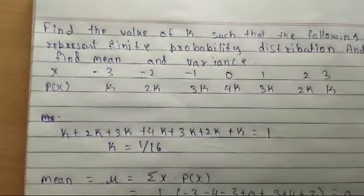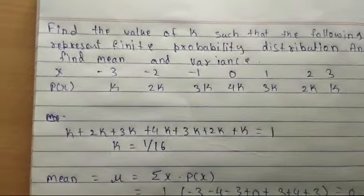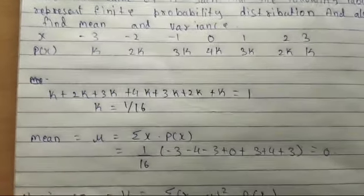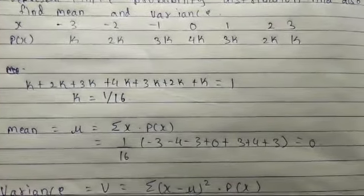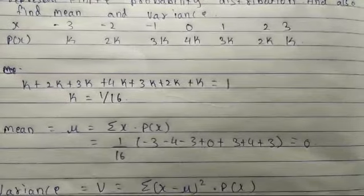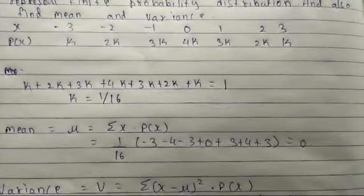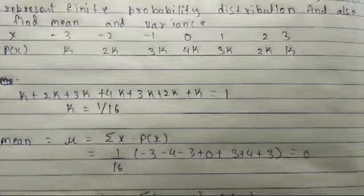To calculate mean, the formula is sigma x of p of x. So by multiplying x and p of x, we are getting 1 by 16 as common. And by adding all the values and dividing by 16, we are getting the mean value is 0.